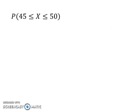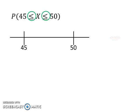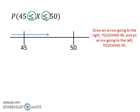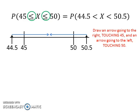We also have probability of x from 45 to 50. To determine whether to add or minus 0.5, draw a line with 45 and 50 on it like this. Because of the less than or equal signs here, we need to draw an arrow going to the right of 45 touching the 45, and an arrow going to the left of 50 touching the 50. In order for the arrow to touch 45, we reverse a little bit from 45. Since we reverse a little bit, we need to minus 0.5 from 45. And since we move forward a little bit, we need to add 0.5 to 50. Thus, the probability becomes probability of x between 44.5 and 50.5.